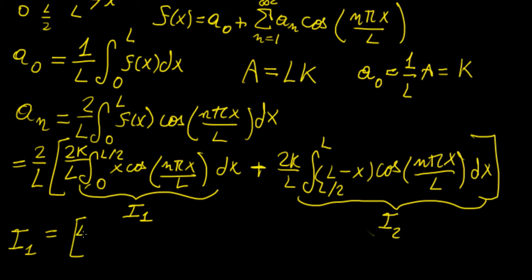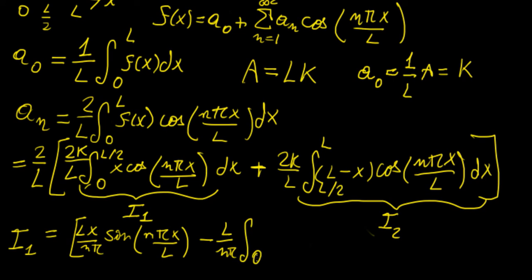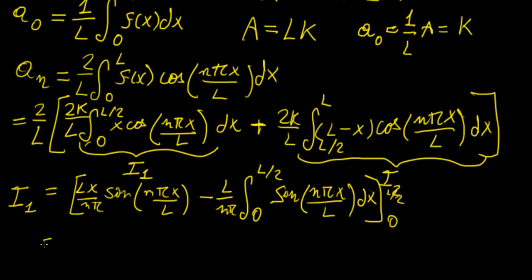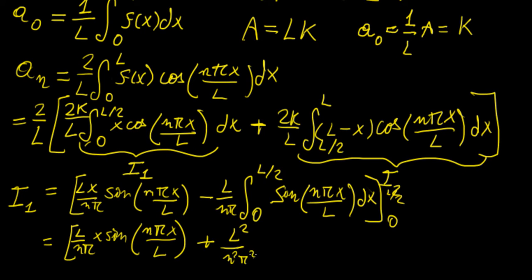Evaluating Integral 1 by integration by parts, we get: (Lx/nπ) sine(nπx/L) minus (L/nπ) times the integral of sine(nπx/L) dx, evaluated from 0 to L/2. This gives: (L/nπ)x sine(nπx/L) plus (L²/n²π²) cosine(nπx/L), evaluated between 0 and L/2.